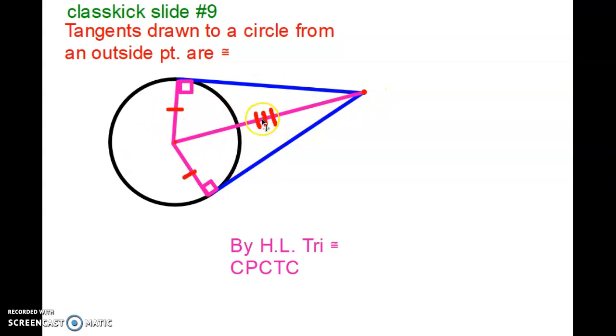Now this side is in both of these triangles. They happen to be the hypotenuse and there's my leg. So these two triangles are congruent by hypotenuse leg. The triangles are congruent and therefore CPCTC. This side here and this side are congruent because the triangles are congruent and by corresponding parts, these two pieces are congruent. Therefore tangents drawn to an outside point to the circle, they're going to be congruent.